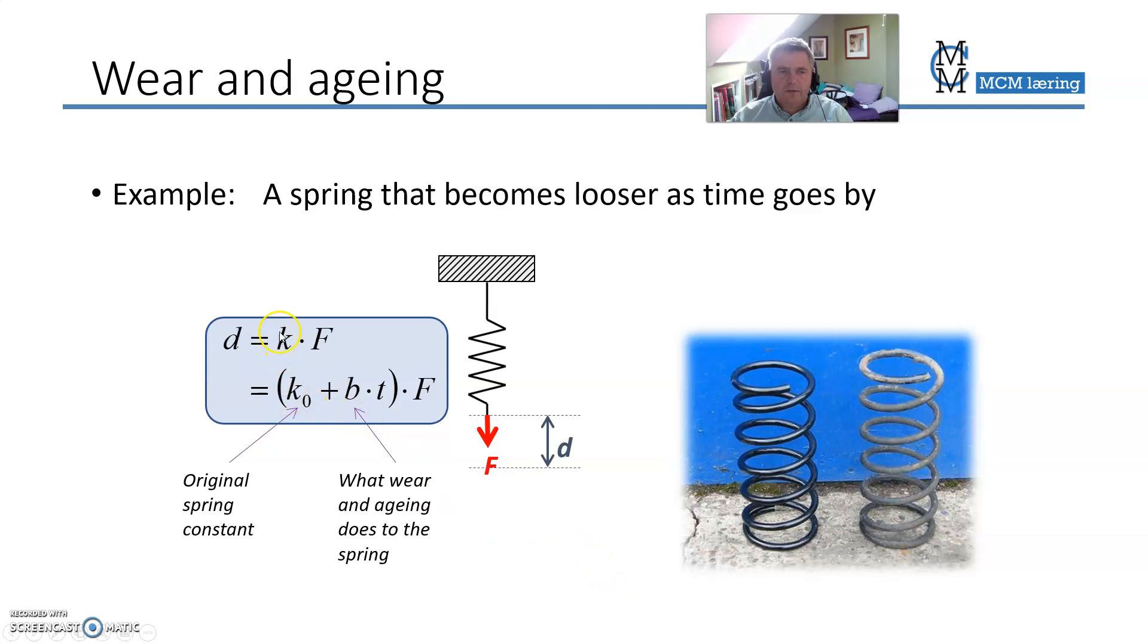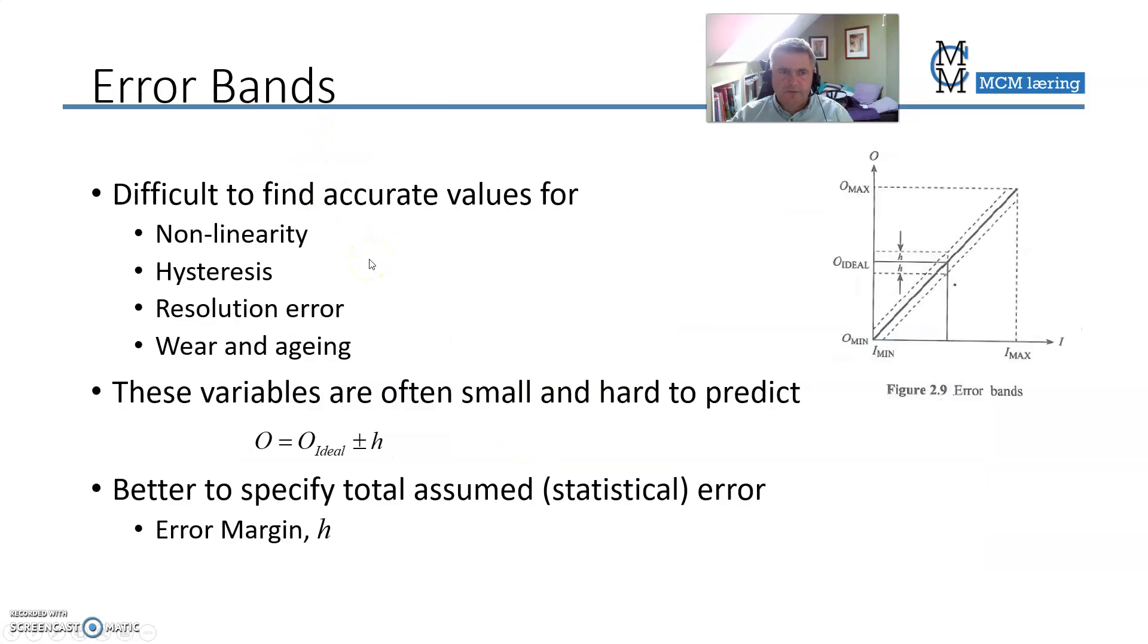It's really difficult to try to find exact numbers for this wear and aging. So therefore, in many cases, we define all these small deviations from the ideal straight line. We define them into one large error or deviation that is called the error band.